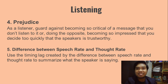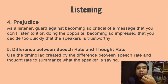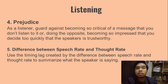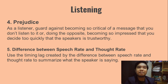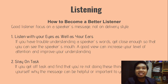Next, outside distractions — as a listener, do your best to control the listening situation and try to minimize outside distractions. Prejudice — as a listener, guard against becoming so critical of a message that you don't listen to it, or doing the opposite: becoming so impressed that you decide too quickly that the speaker is trustworthy. The last is the difference between speech rate and thought rate — use the time created by this difference to summarize what the speaker is saying.